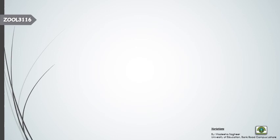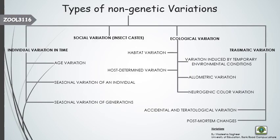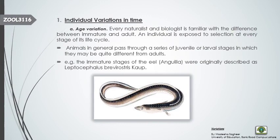This is the whole picture of the different types of non-genetic variations. Now, the first non-genetic variation is individual variations in time, which is further categorized into different types. The first is age variation — these variations are due to differences in age. Some animals are quite different at their earlier or larval stages compared to their adult forms. Animals in general pass through a series of juvenile or larval stages in which they may be quite different from adults.